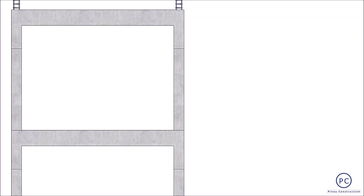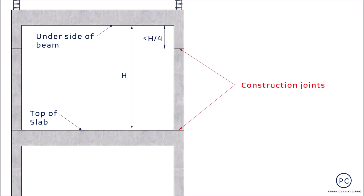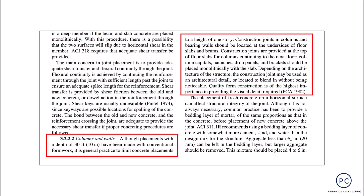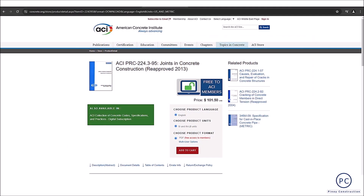Walang binabanggit sa NSCP 2015 regarding sa location ng putol ng buhos o construction joints sa column. At katulad ng nabanggit na, ang general at recommended practice sa bawat floor level ay putulin ito sa ibabaw ng slab at within the last H over 4 ng clear height ng column na nasa underside ng beams. Ito ay stated sa chapter 3, section 3.2.2.2.2 ng ACI 224.3R-95, entitled as Joints in Concrete Construction, na isang report review document published ng American Concrete Institute. Although ang copy presented sa video ay re-approve noong 2001, may paniniwala po ako na ito pa rin ang information na nakasaad sa latest version nito noong 2013.